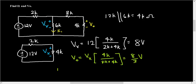For I1, this will just be Vx over 6K. This is just by using Ohm's law. So this is going to be 4 thirds milliamps. And there you go.